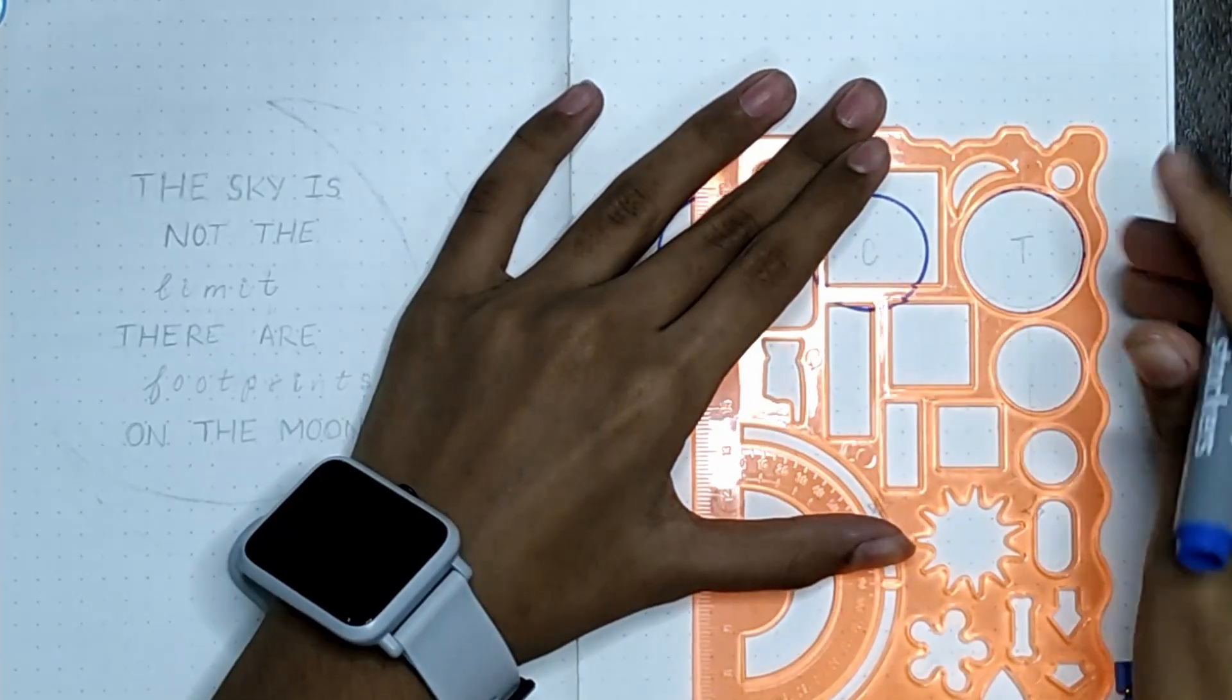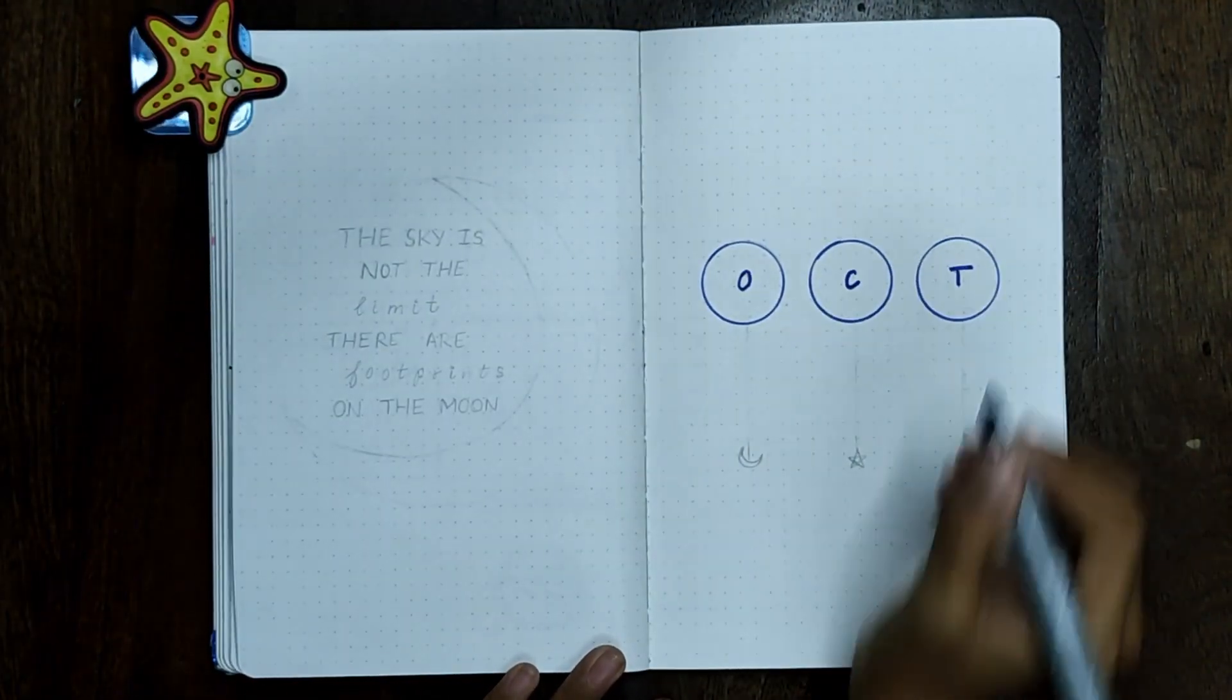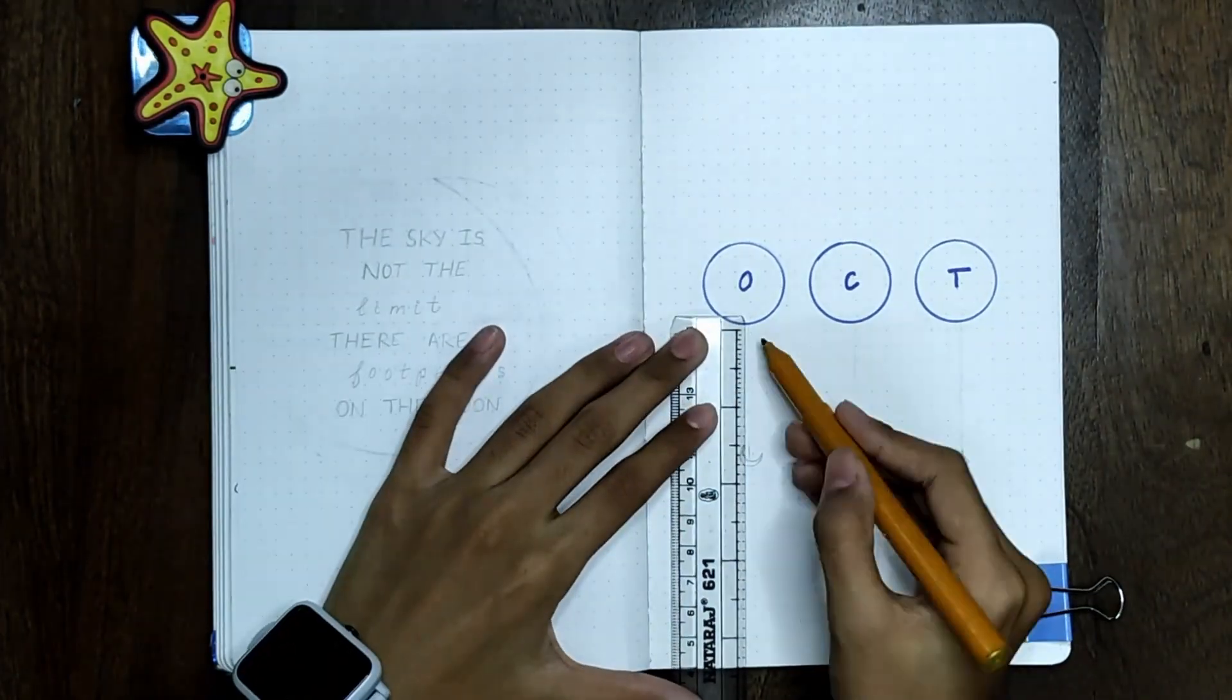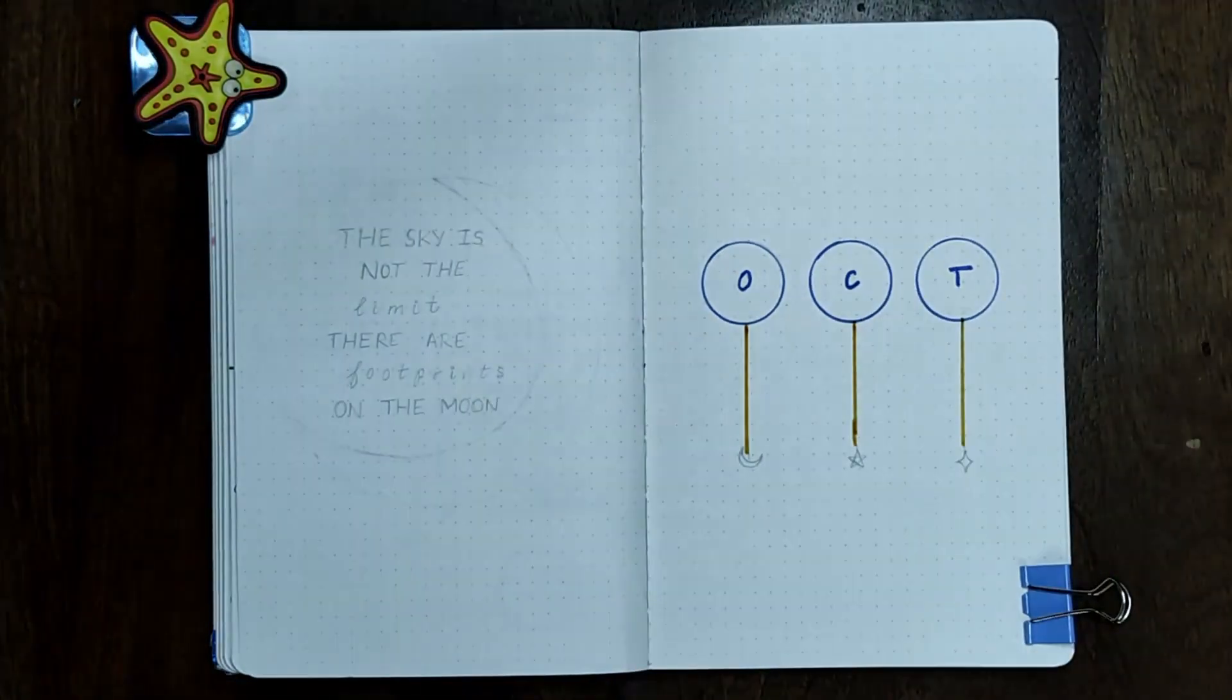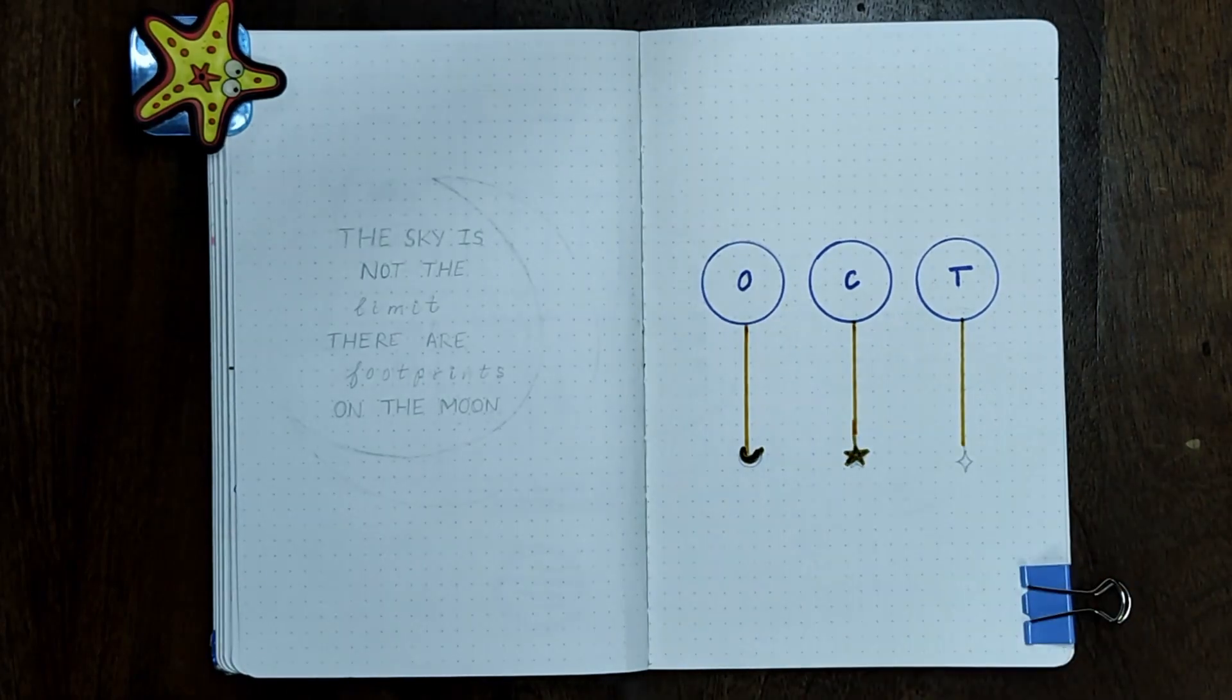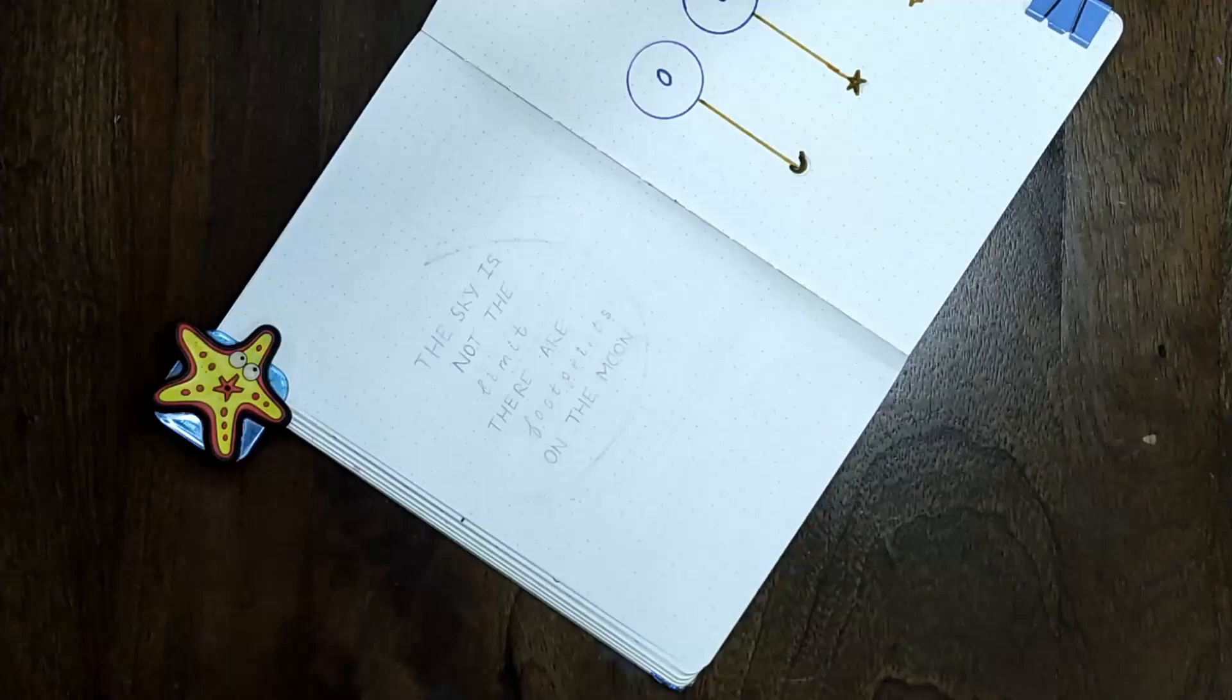So here I'm basically drawing three simple circles and just writing 'October' there, and then I'm just going to have these kind of hanging things which have a moon, a star, and then another kind of star.